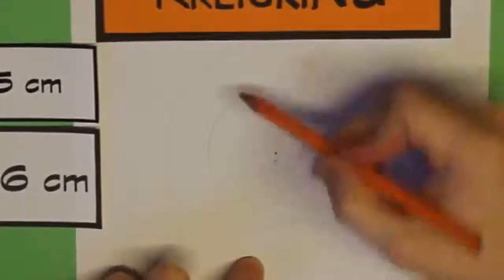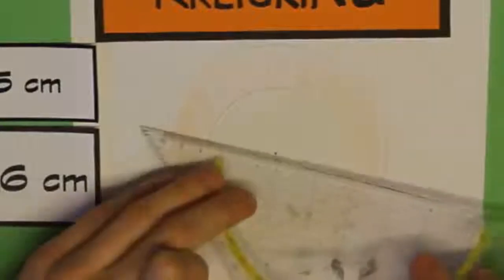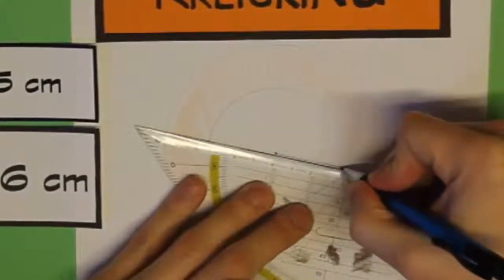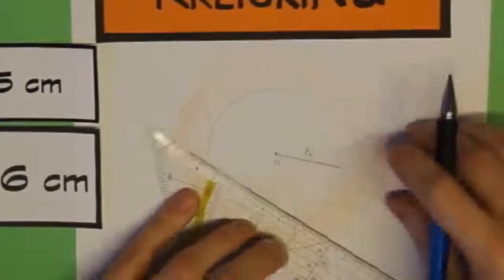Und den Kreisring dieser Fläche malen wir auch noch an. Und was ihr auch nicht vergessen sollt, ist die beiden Radien immer einzuzeichnen und diese auch richtig zu beschriften. Also mit R1 und R2.